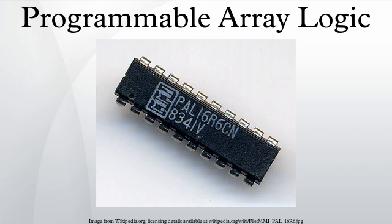In June 1983, AMD introduced the 22V10, a 24-pin device with 10 output logic macro-cells. Each macro-cell could be configured by the user to be combinational or registered, active high or active low. The number of product terms allocated to an output varied from 8 to 16. This one device could replace all of the 24-pin fixed function PAL devices. Members of the PAL V-Series included the PAL-16V8, PAL-20V8, and PAL-22V10.